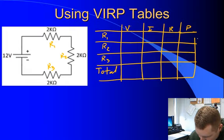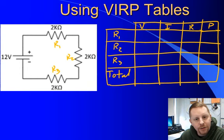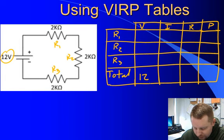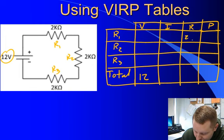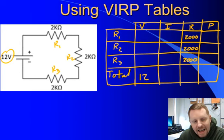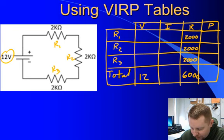Begin by filling in what we already know. The total potential difference is given by our voltage source: 12 volts. We know R1, R2, and R3 are each 2,000 ohms. Since I have three resistors in series, the total equivalent resistance must be 6,000 ohms, so I'll fill that in for my total. My total resistance is 6,000 ohms.